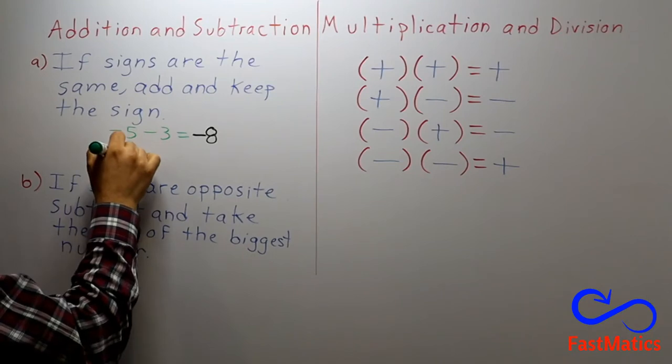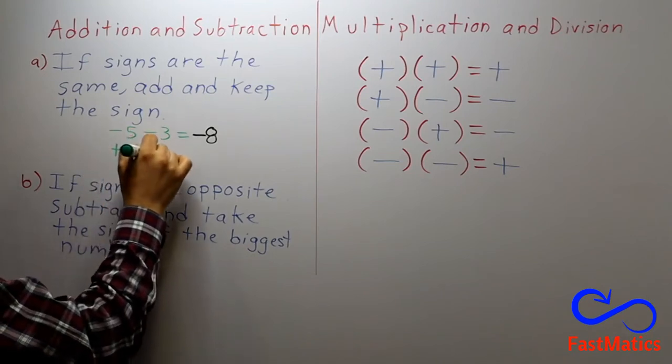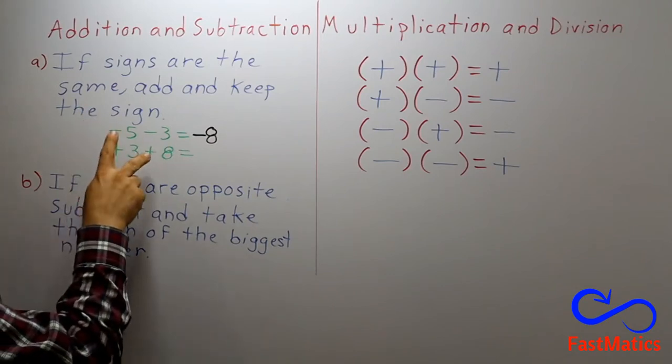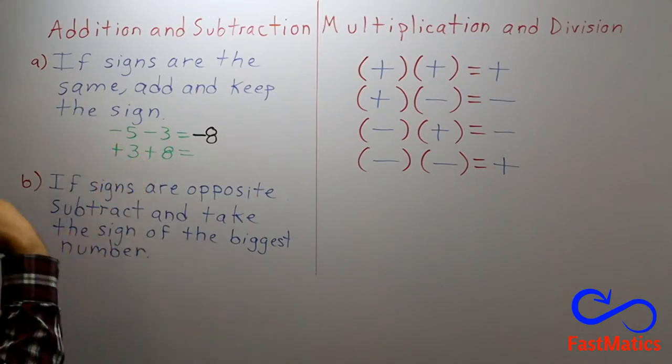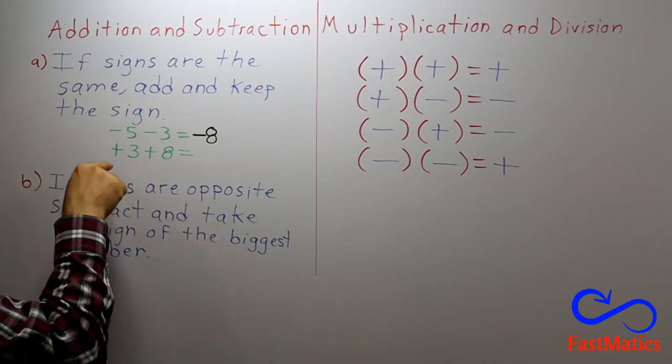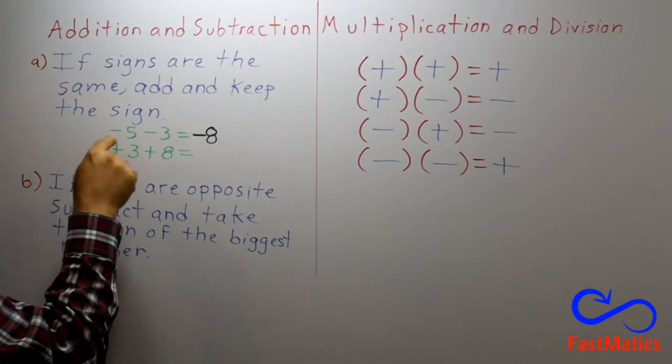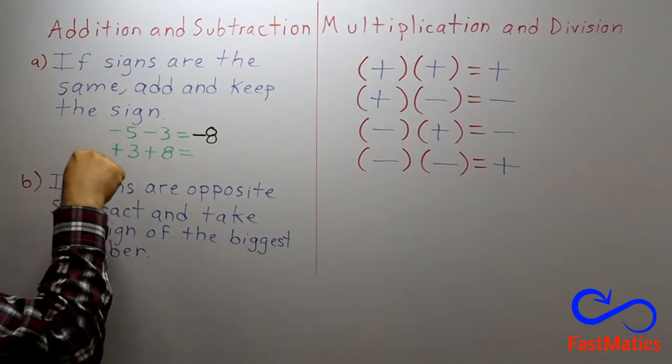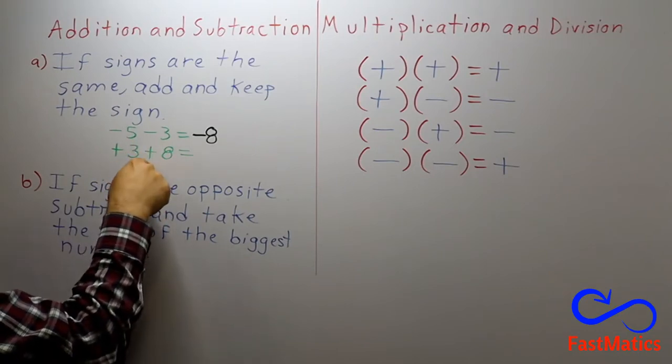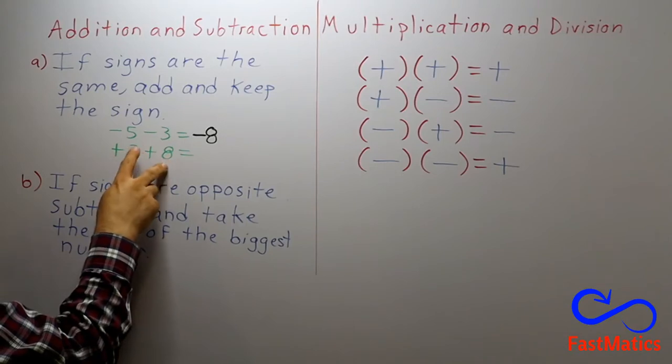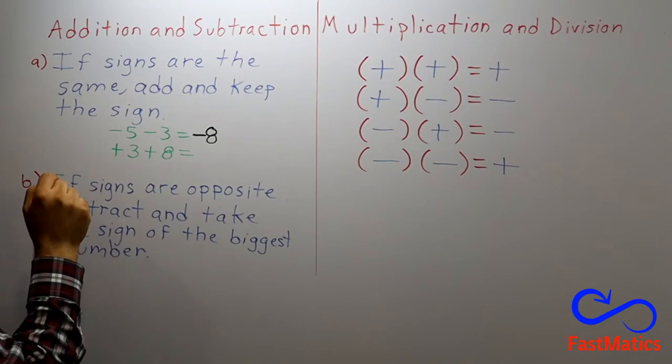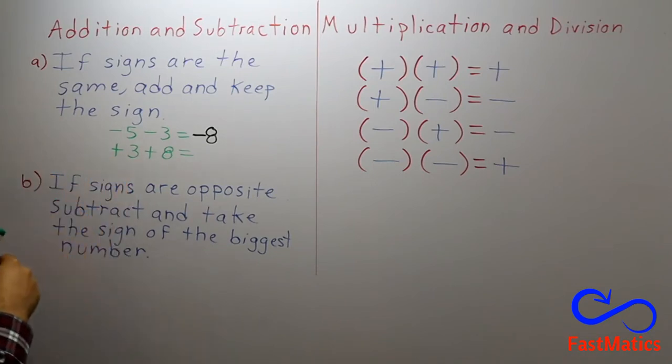Now, another example. Plus three plus eight equals. So, here we have two positive signs. And sometimes you can write it or you cannot write it. If it is at the beginning, it is the same to write it or not to write it. But if it is in the middle of two numbers, if you don't write the positive sign, you are not indicating that you are adding numbers.